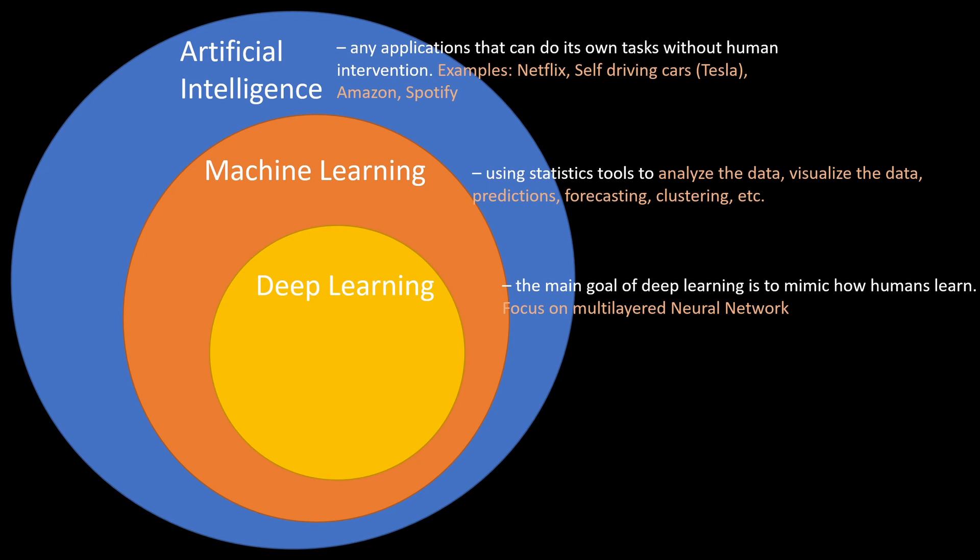we try to mimic how birds fly through the invention of airplanes and helicopters, but that's not exactly how birds fly, right? We just try to mimic their way of flying, but it's not exactly how it works. And the same thing applies here with deep learning.